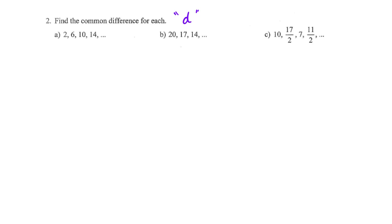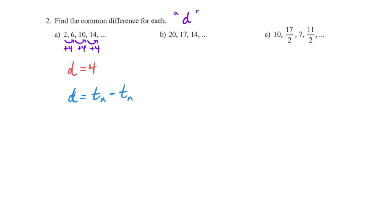Okay, we're back. Looking at problem two A, we should be good to recognize that we are adding four, adding four, adding four — and so we can state that our D value is four. But let's say we can't see it. If for some reason when we look at the sequence 2, 6, 10, 14 we can't see that our D value is four, we could go back and use something we've already talked about: D is always term N subtract term N minus one.